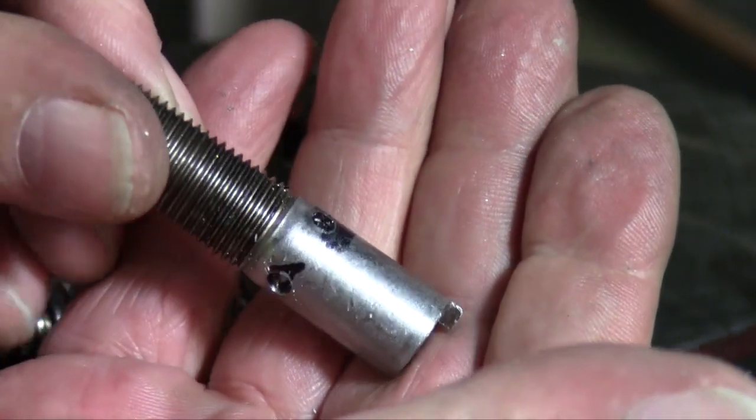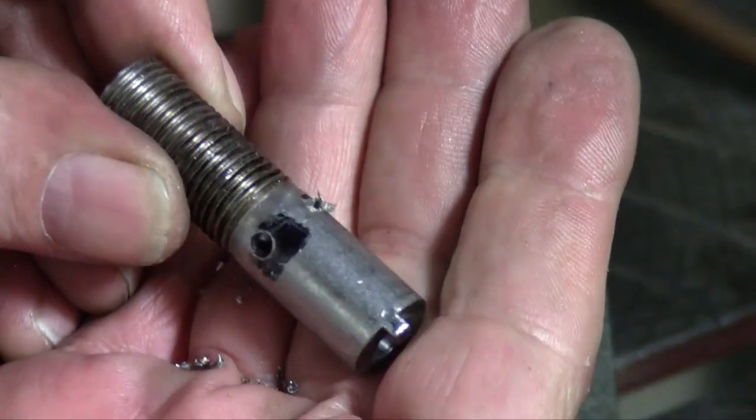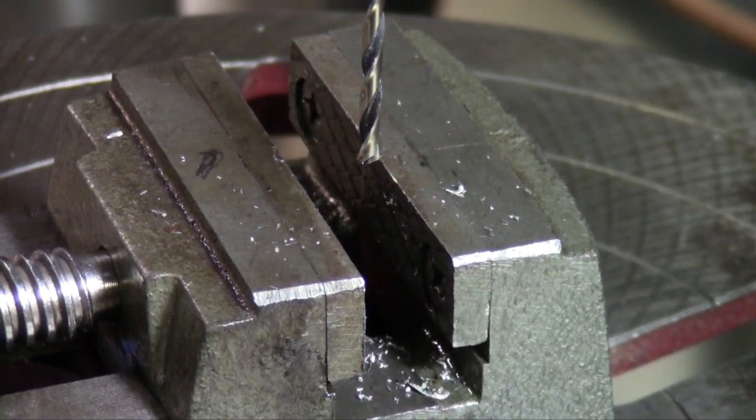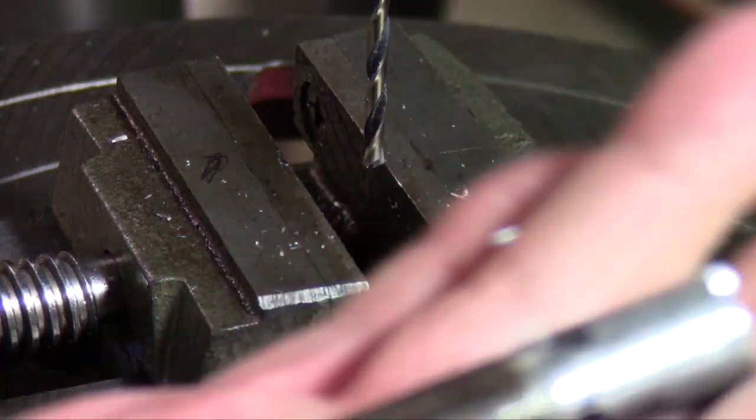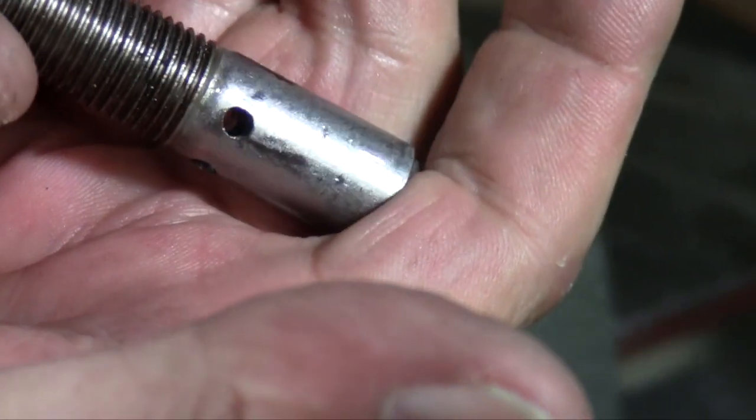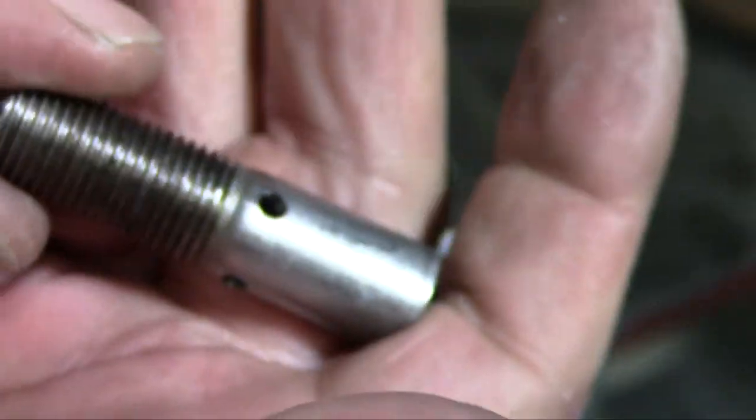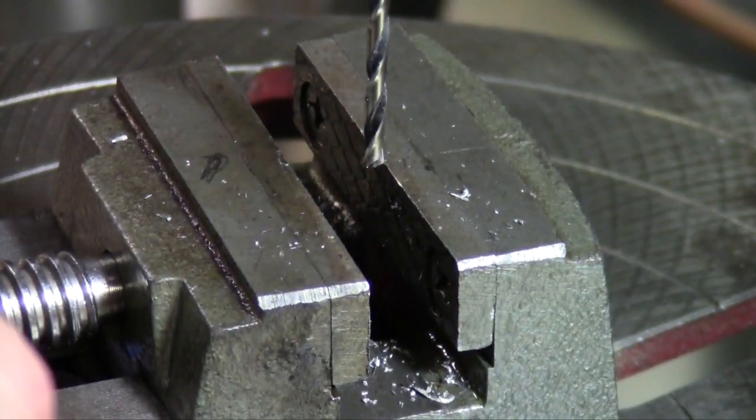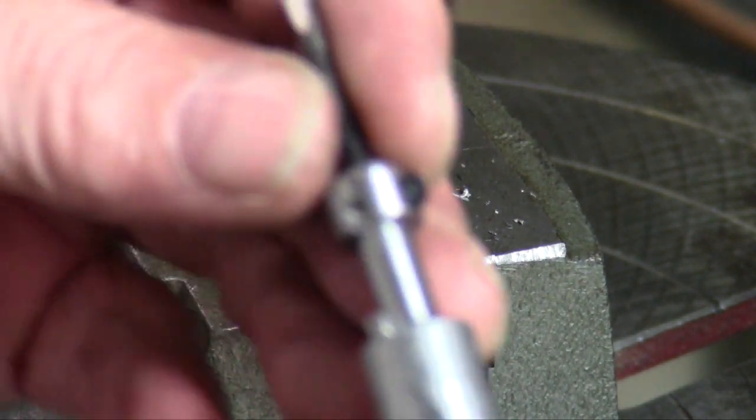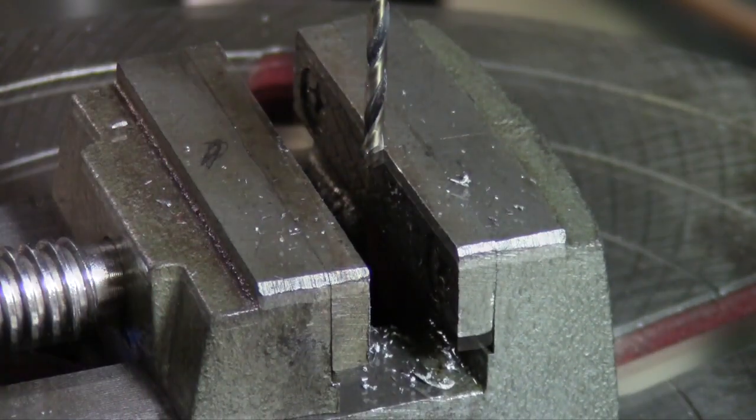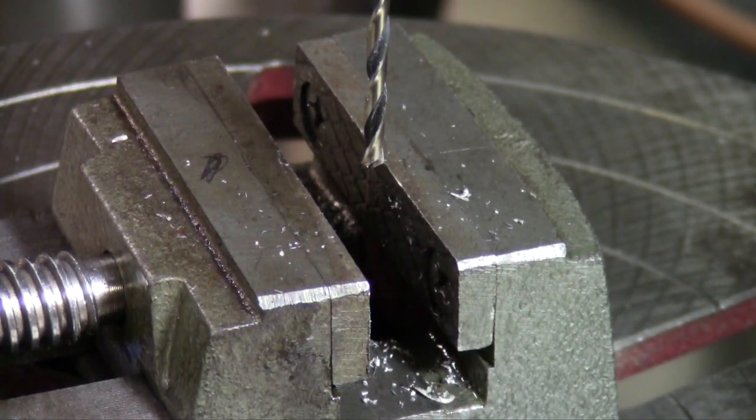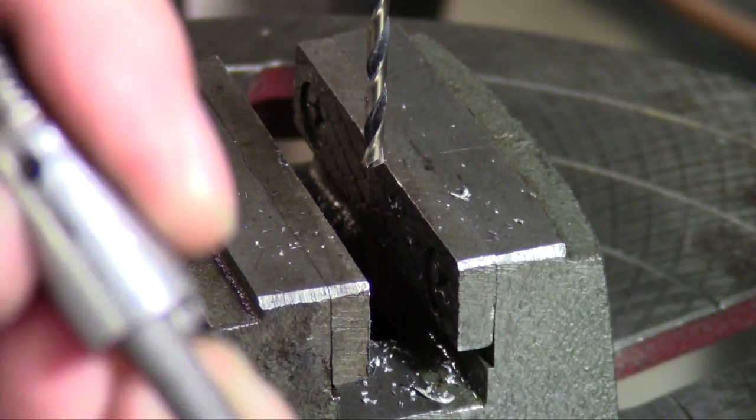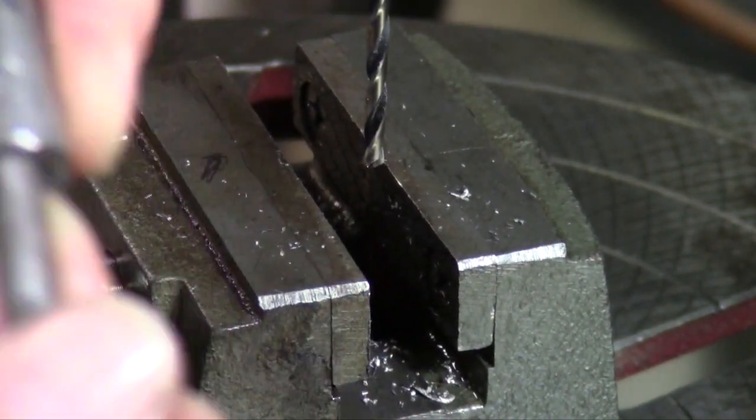Now we have our four holes right where we want them, right at 750. Knock the burrs off of it. There's our four holes at 750, pretty close. Looks like there's a little bit of burr on the inside. Our half round file, knock the burrs off that are down here by the holes we just drilled.